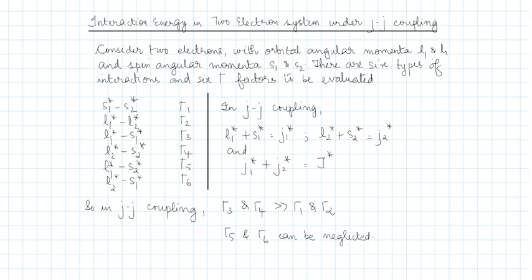In JJ coupling, the magnitude of the gamma factors will be such that gamma3 and gamma4 will be larger in magnitude because this interaction is stronger in JJ coupling, while gamma1 and gamma2 will be lesser in magnitude compared to gamma3 and gamma4. The other two gamma factors are extremely small and can be neglected.